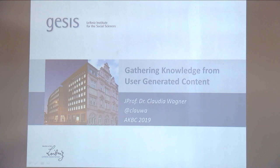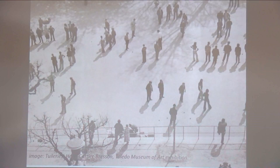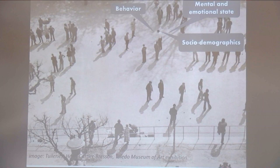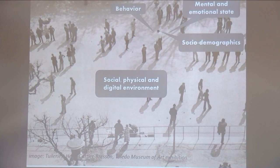The connection between my work and the topic of this conference is user-generated content and how to extract knowledge about people from it. The types of knowledge we are interested in include what people think and feel — their attitudes, opinions, and viewpoints — as well as what they do: their actions, decisions, and behavior. We also want to understand who they are via sociodemographic attributes and the social, physical, and digital context in which they are embedded. In empirical social sciences, surveys are the main instrument used for extracting this type of knowledge.